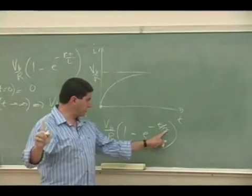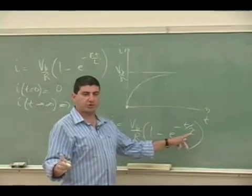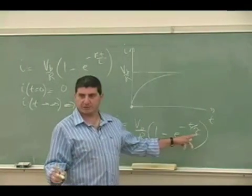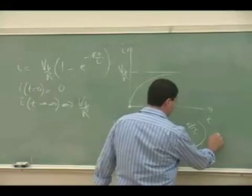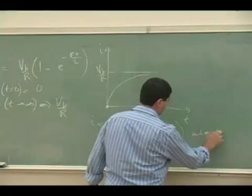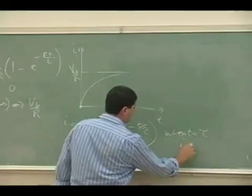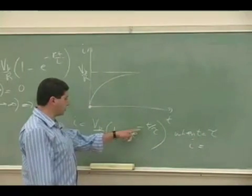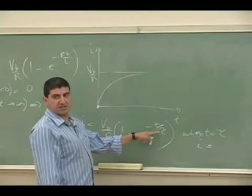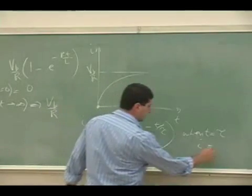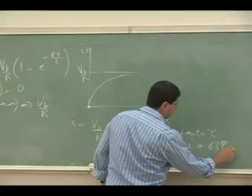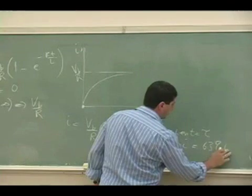So that in one tau, in a time equal to 1 tau, the current should be equal to 63% of its maximum value, right? When T equals tau, the current is equal to, and when you do this, 1 minus E to the negative 1, you get 63% of VB over R.